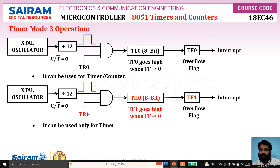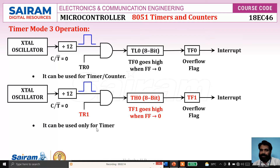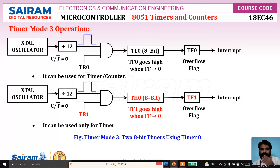So timer 0 is split into two different timers. TL0 and TH0: TL0 is used as a timer/counter and TH0 is used as only a timer. For TL0, the timer flag TF0 — that means flag and control bits of timer 0 — are used. For TH0, the flag and control bit of timer 1 is used. This is called mode 3: split timer mode — two 8-bit timers using timer 0.